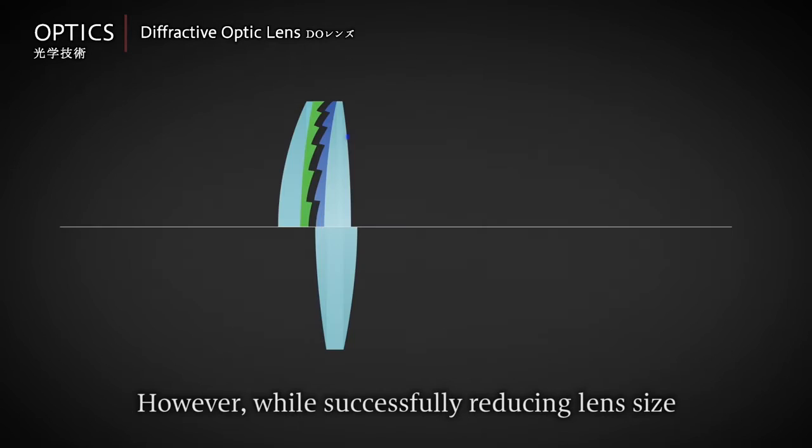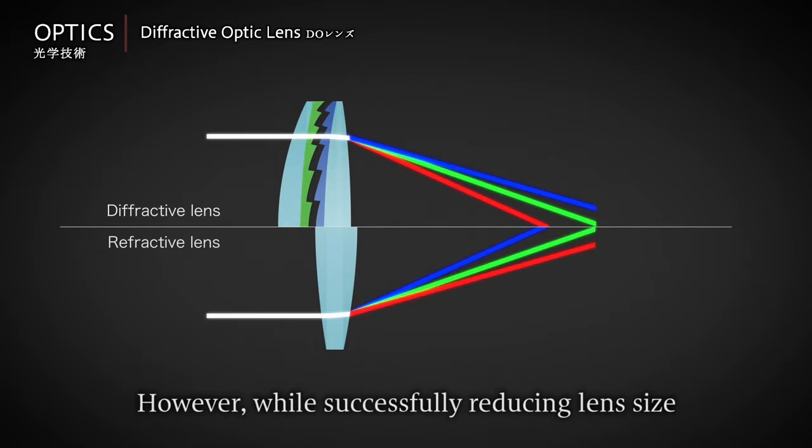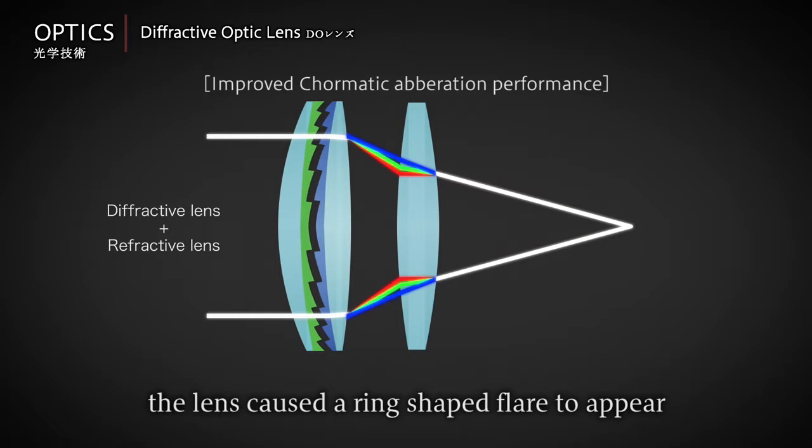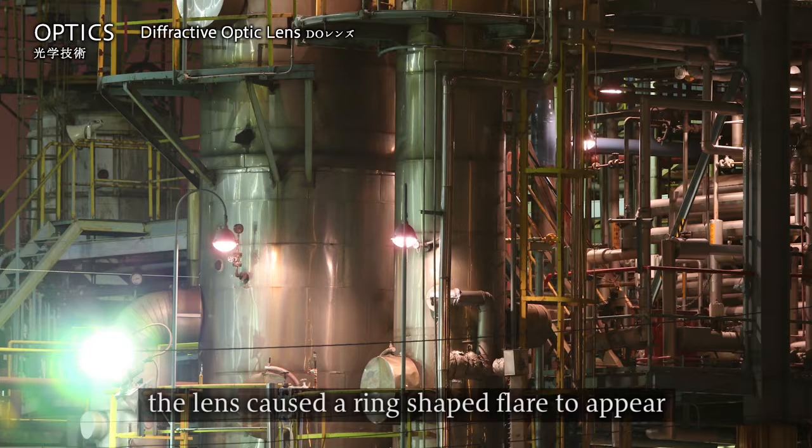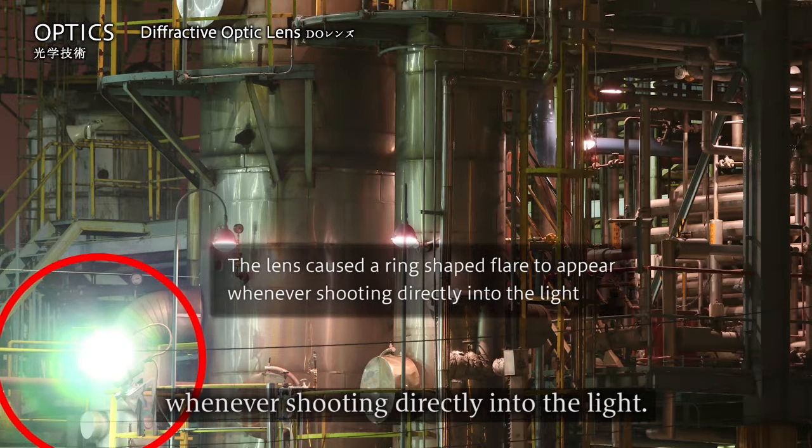However, while successfully reducing lens size and correcting chromatic aberration, the lens caused a ring-shaped flare to appear whenever shooting directly into the light.